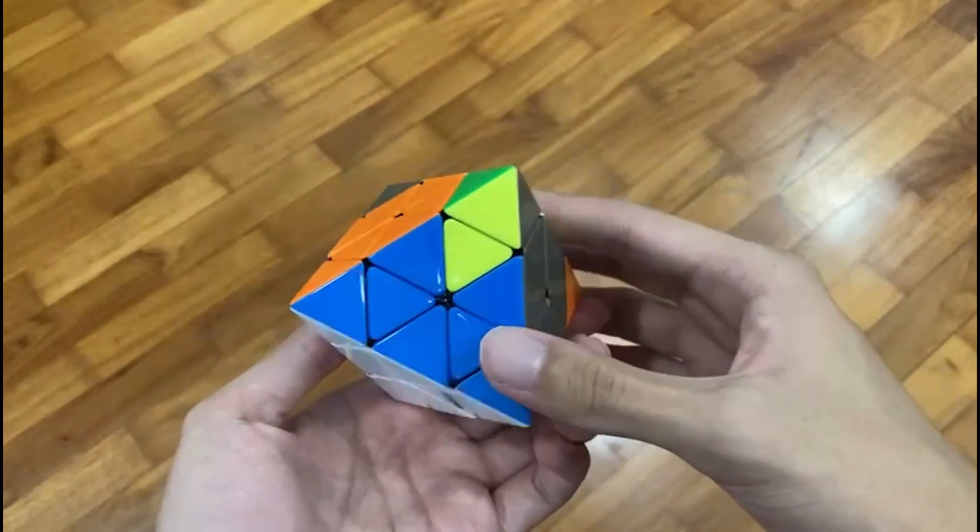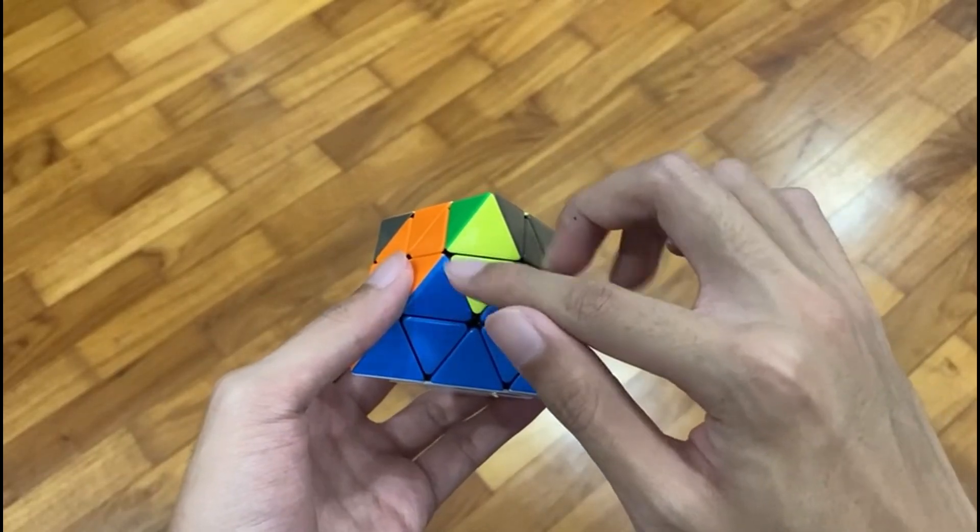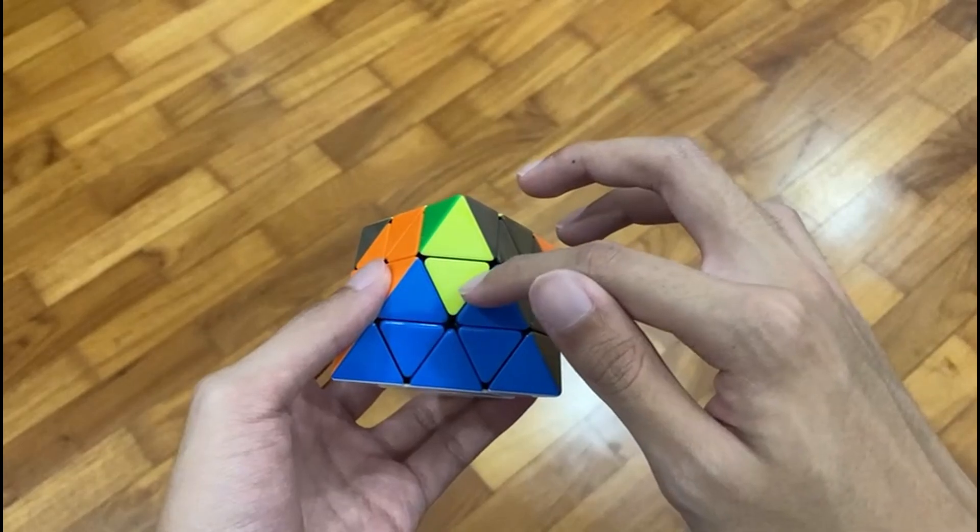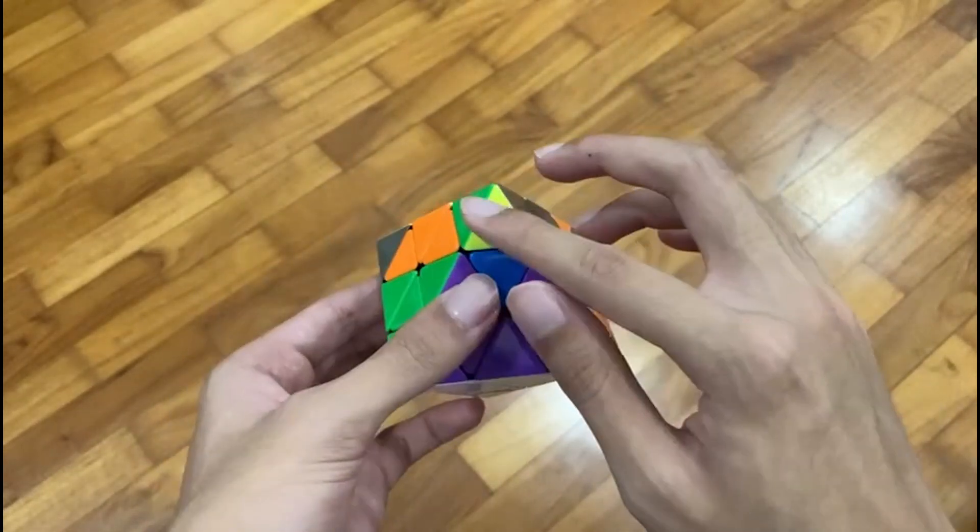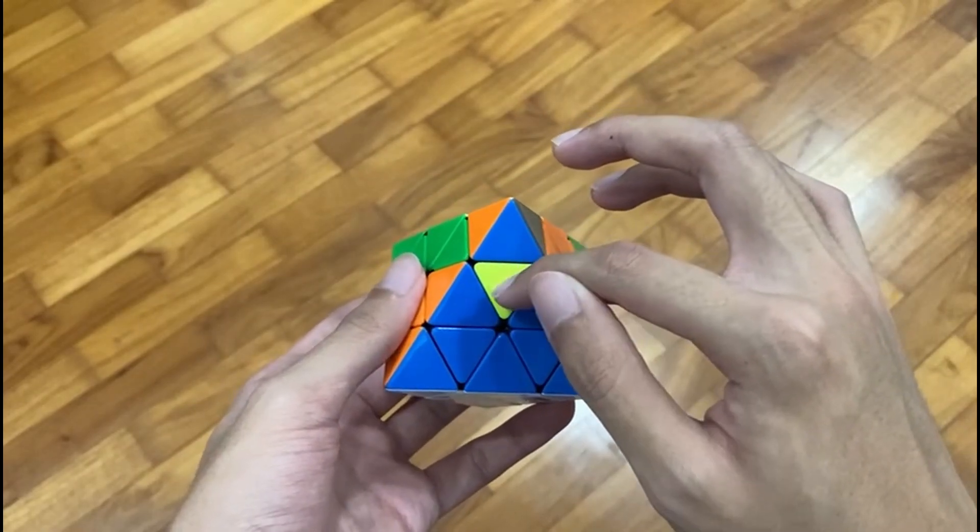However, something that you should note is that doing something like this with a yellow and a yellow, this is not a triplet, not in the beginner method, and not in this method too. And something else you should know is that when you're forming a triplet like, let's say this,